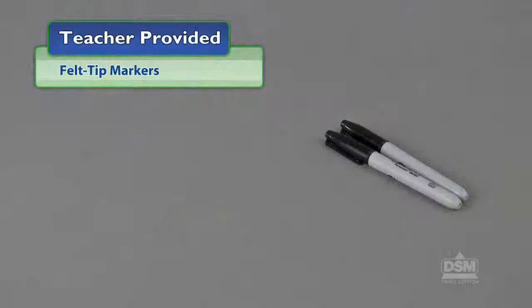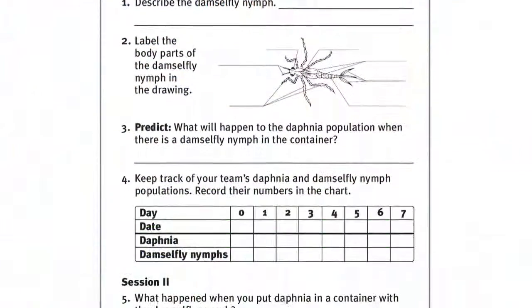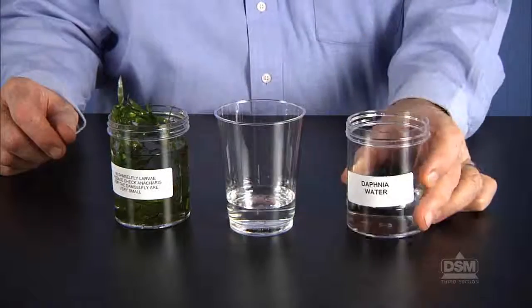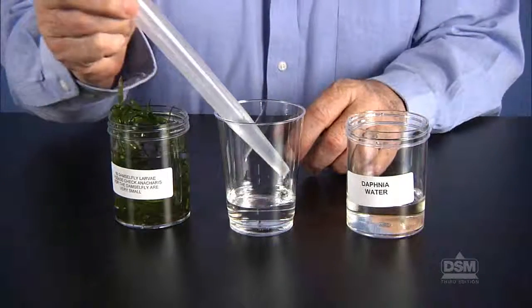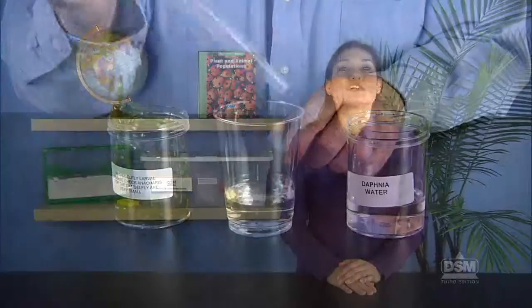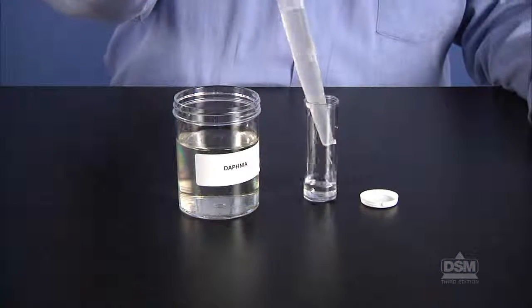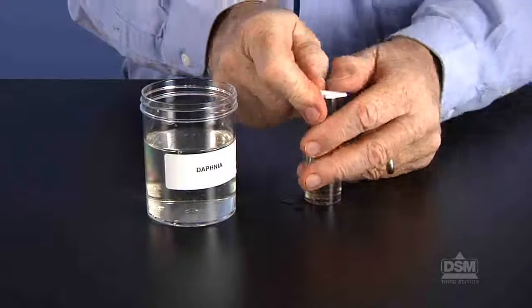You will also need to provide felt-tip markers. To prepare for Session 1, make a copy of Activity Sheet 11 for each student. When the damselfly nymphs arrive, place each nymph in a separate 10-ounce container with 2 cm of daphnia water with a few sprigs of vegetation from the shipping container. Do not feed them for several days before this activity. For each team, use the baster to fill a vial two-thirds full with at least 30 daphnia and cap the vial securely.